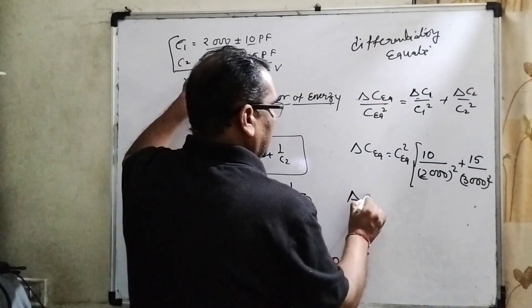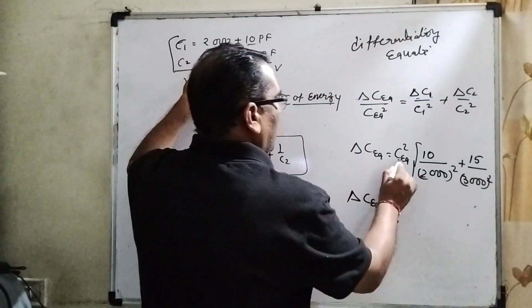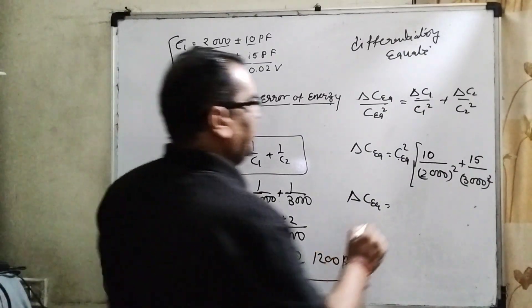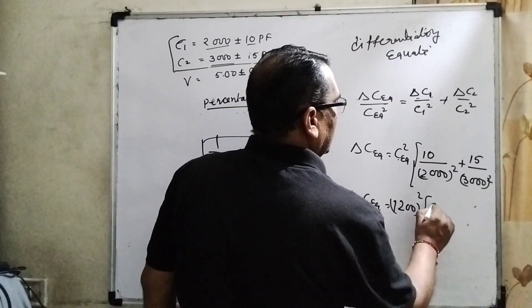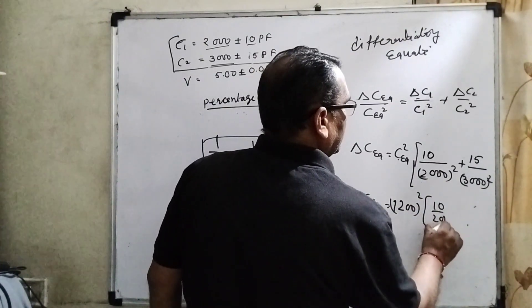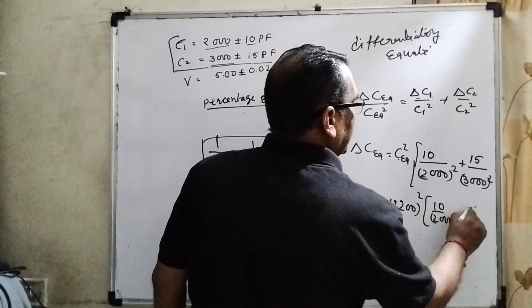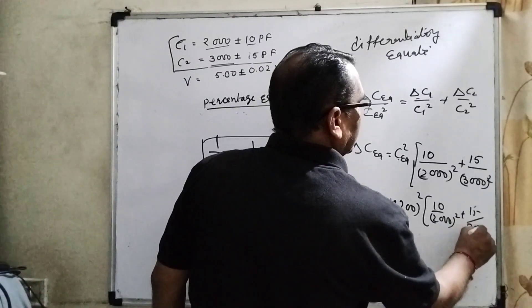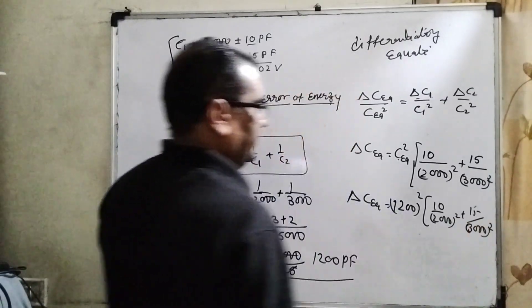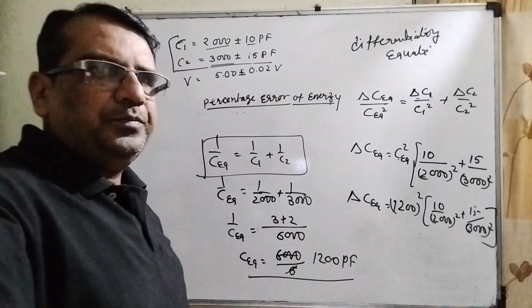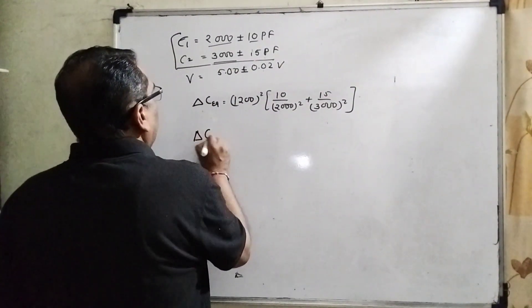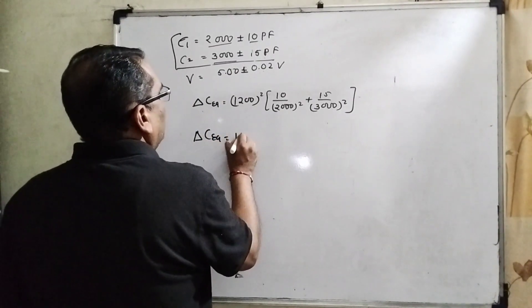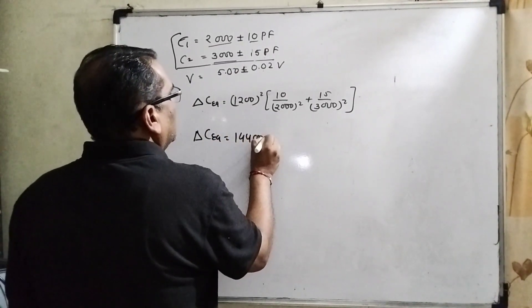Now C_eq, what is the equivalent value of capacitance? 1200 picofarad. So 1200 squared: 10 upon 2000 squared plus 15 upon 3000 squared. Now solving this part, delta C_eq is 14400.